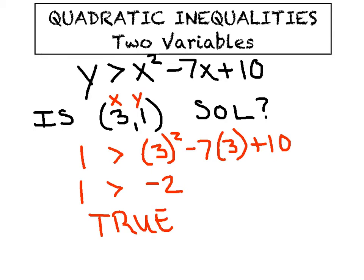Therefore, what kind of conclusion would you draw? I would say, therefore, the ordered pair 3, 1 is indeed a solution for this quadratic inequality.